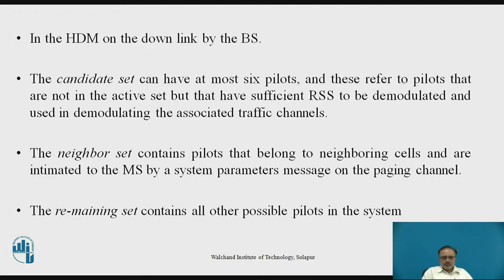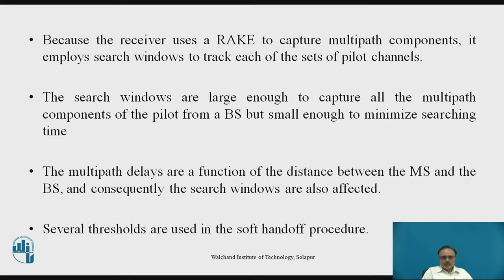The candidate set, indicated in the handoff direction message on the downlink by the BS, can have at most six pilots. These refer to pilots not in the active set but with sufficient RSS to be demodulated and used on the associated traffic channel. The remaining set contains all other possible pilots in the system. The receiver uses the rake to capture multipath components and employs search windows to track each set of pilot channels. The search windows are large enough to capture all multipath components but small enough to minimize searching time. Multipath delays are a function of distance between the MS and BS, and the search windows are affected accordingly.